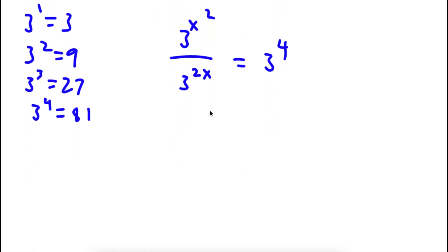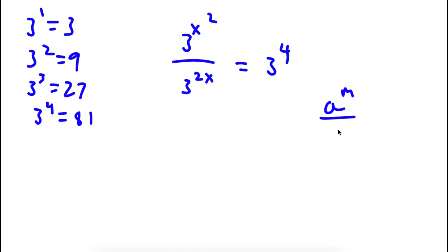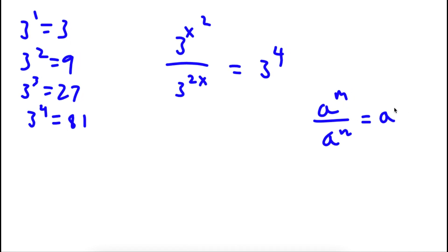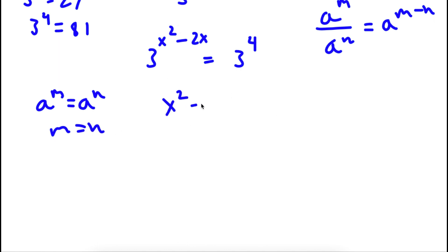So now this is pretty simple to solve. If I have something in the form A to the power of M over A to the power of N, this is equal to A to the power of M minus N. So 3 to the power of x squared over 3 to the power of 2x is going to equal 3 to the power of x squared minus 2x. Now this is equal to 3 to the power of 4. If A to the power of M equals A to the power of N, then M equals N, so x squared minus 2x is equal to 4.